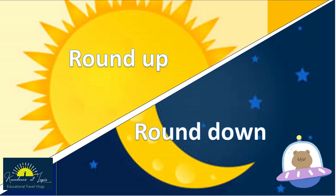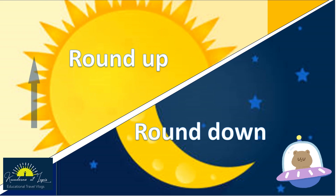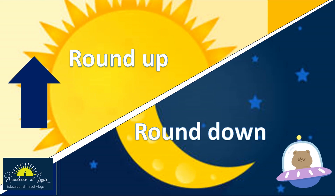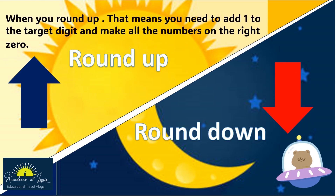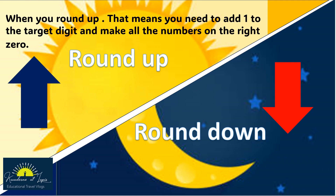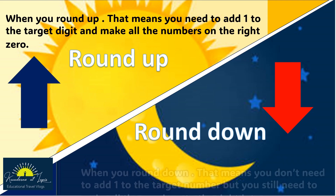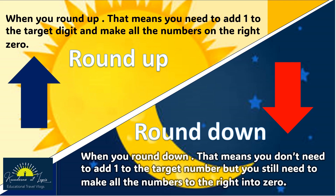When rounding numbers, we come across these terms: round up and round down. When we say round up, that means you need to add 1 to the target digit and make all the numbers on the right 0. But if we say round down, that means you don't need to add 1 to the target number, but you still need to make all the numbers to the right into 0.